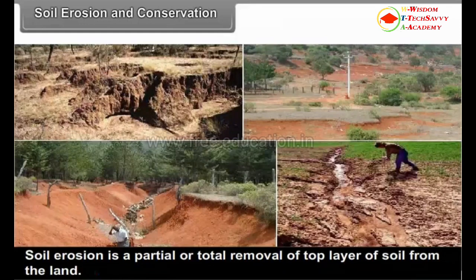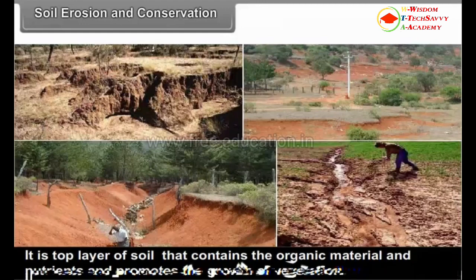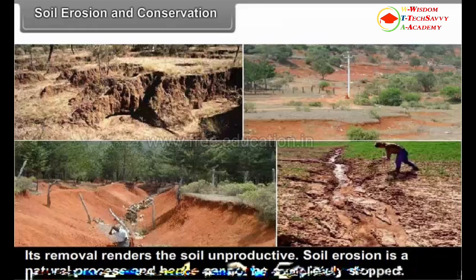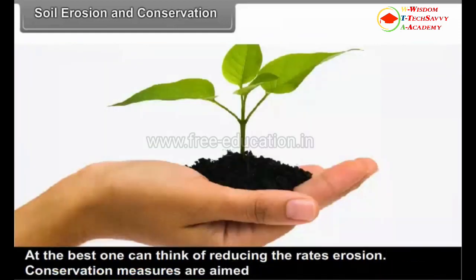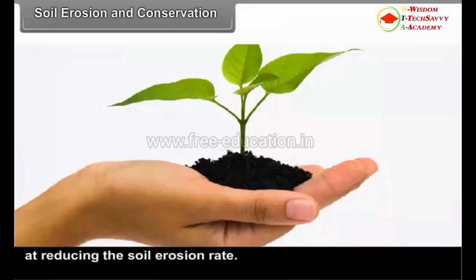Soil erosion is a partial or total removal of the top layer of soil from the land. It is the top layer of soil that contains organic matter and nutrients and promotes the growth of vegetation. Its removal renders the soil unproductive. Soil erosion is a natural process and hence cannot be completely stopped. At best, one can think of reducing the rates of erosion. Conservation measures are aimed at reducing the soil erosion rate.